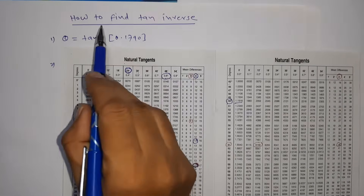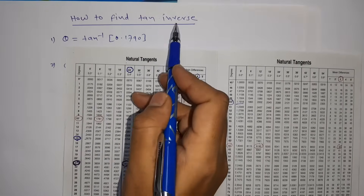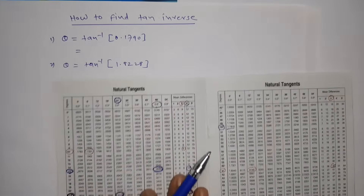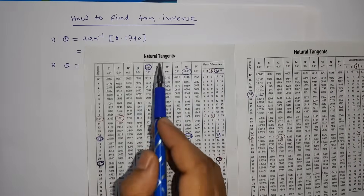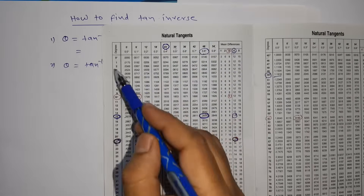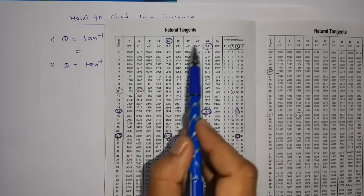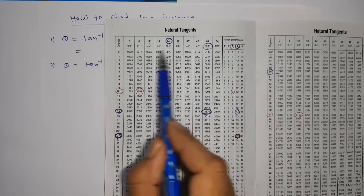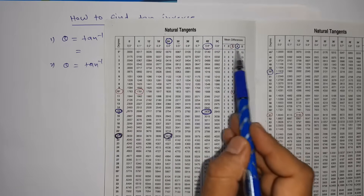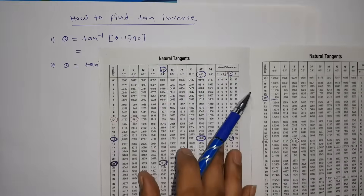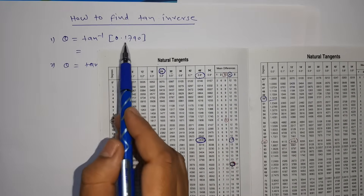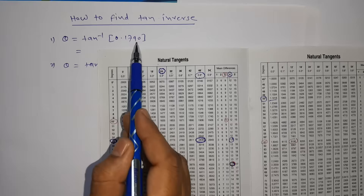Now how to find tan inverse — we'll see two examples. To find this, we have to use the natural tangent table. On this side we have degrees, and we have minutes as well as degrees, and mean difference in minutes.